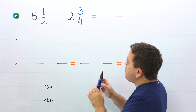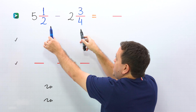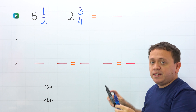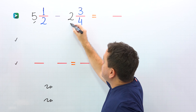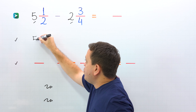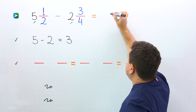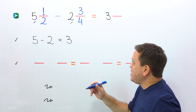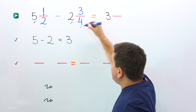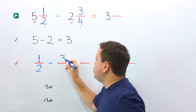Let's move on to the last example. This problem is different than the previous ones. In this example, we need to subtract 5 and 1 half minus 2 and 3 fourths. These two mixed numbers have different denominators. To find the difference, usually we start by subtracting the whole numbers — 5 and 2. So we put 5 minus 2, and 5 minus 2 gives us 3. We can also put 3 in the answer. It's time to subtract the fractions, so we put 1 half minus 3 fourths.